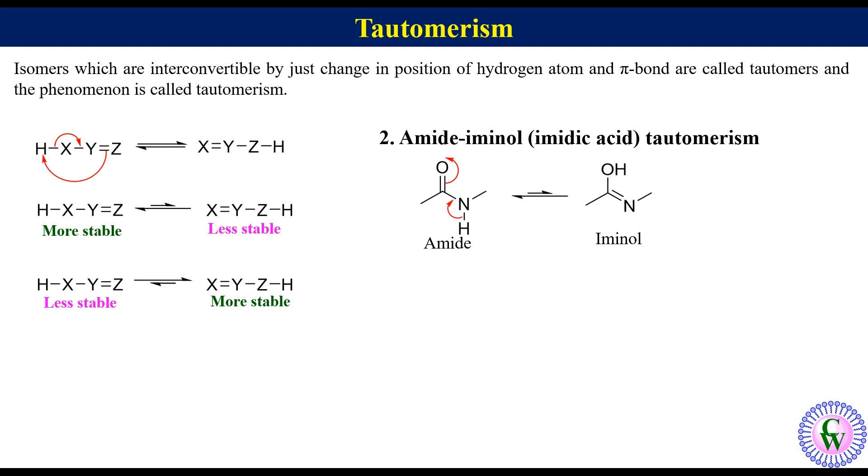Third example is lactam-lactim tautomerism. We know that lactams are cyclic amides. This is a general structure of a lactam. Relocation of hydrogen will give lactim. Since lactam is more stable than lactim, so the equilibrium arrow will be like this.